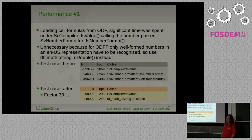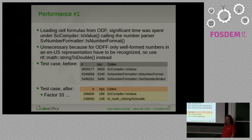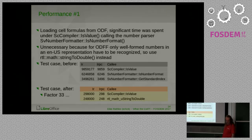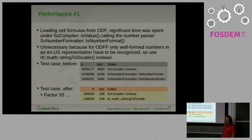Instead we could use rtl::math::stringToDouble, implemented in the base layers. That brought the instruction count down from roughly 9,859,000 spent in sc_compiler::isValue and related calls down to 298,000 — a speedup of a factor of 32 to 33. This was tested with a case of a thousand numbers and formulas alternating on every second row, so no shared formulas were involved and everything had to be parsed.